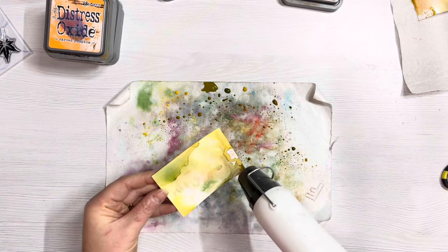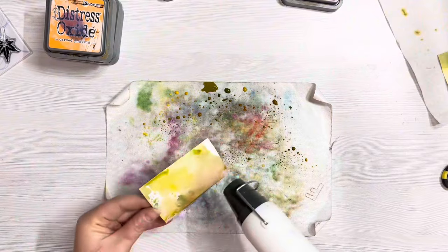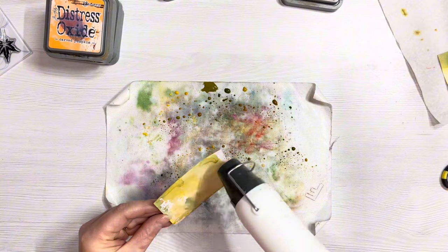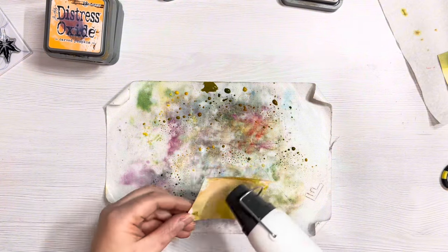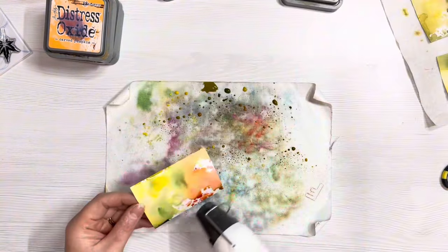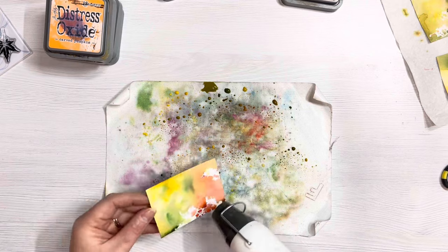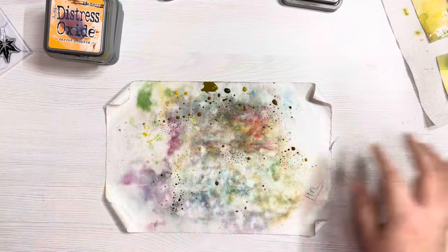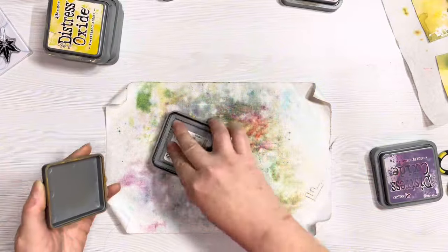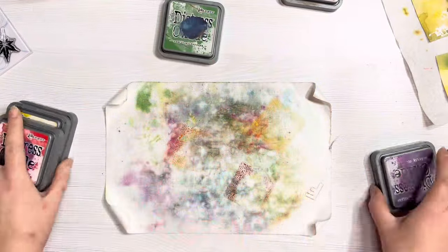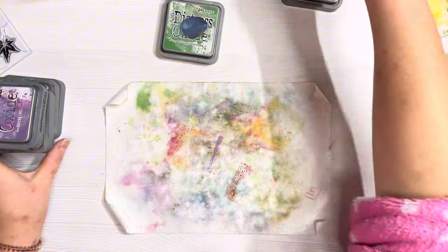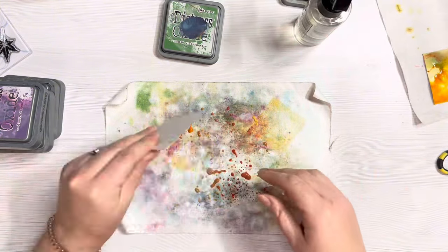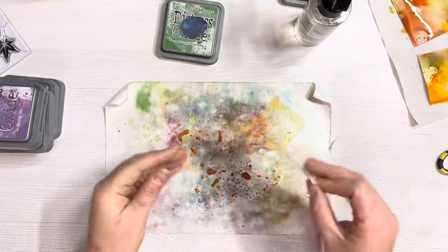I'm using the smooshing technique to create the backgrounds. I've added some Distress Oxides to my non-stick mat and then dipped the cards in and out, checked the color combinations, and dried them with my heat tool. Once they're completely dry, I'm doing the smooshing technique again. I've cleaned off my mat and added more Distress Oxides with a little bit of purple this time to add to the autumn colors.